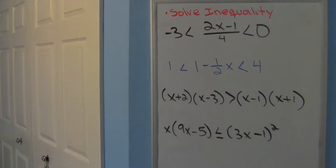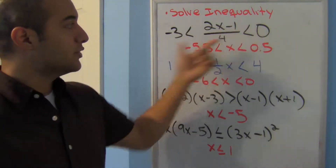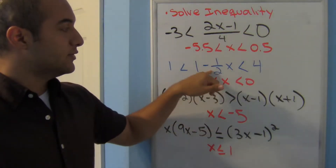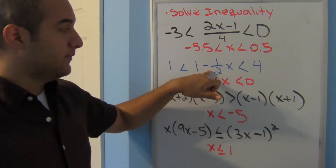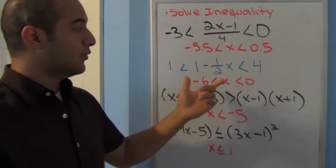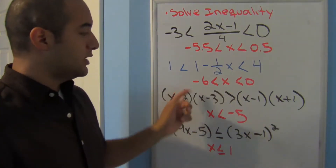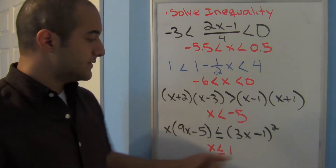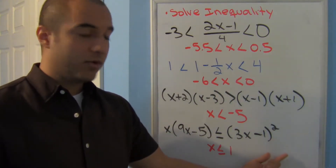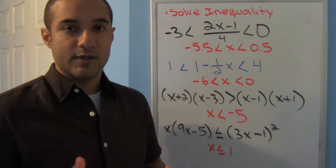Let's try some practice problems. For the first one, don't forget to multiply everything by 4. Once you move the 1, you need to get rid of the negative one-half — you can divide by negative one-half or multiply by its reciprocal, negative 2. Either way you're multiplying or dividing by a negative, so your symbols switch, then switch back. Don't forget to FOIL, and get x on the left side. Good luck!